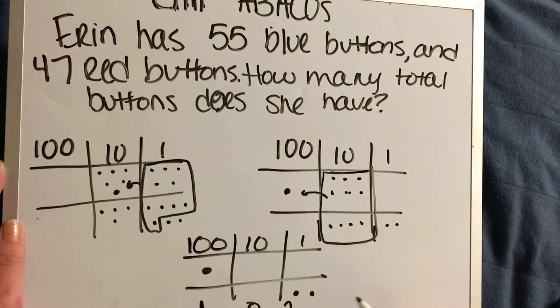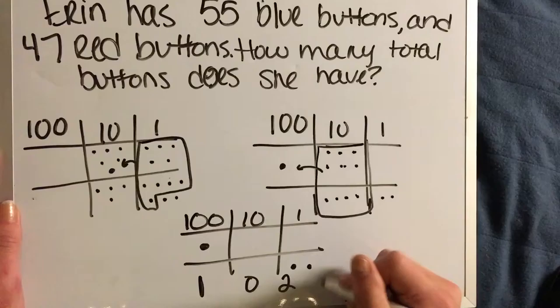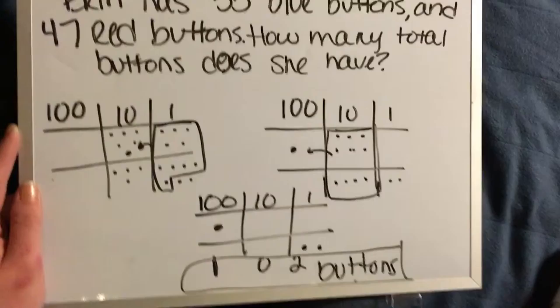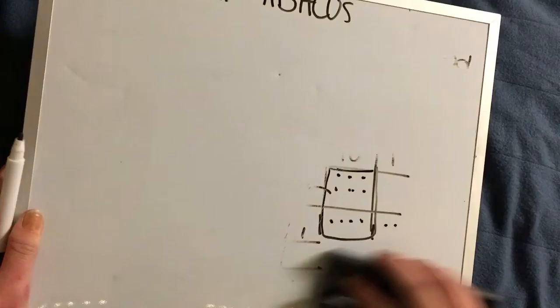All right, so we've one dot here, over here, and then we have two dots in the ones column. So it means we have one zero and two, so the answer would then be a hundred and two buttons. I don't know why I just wrote dogs. Buttons. All right, and that's the addition method.